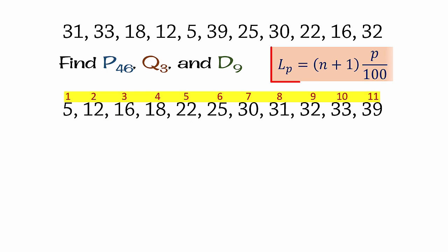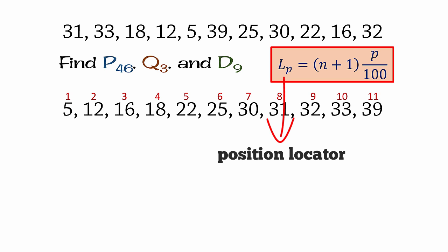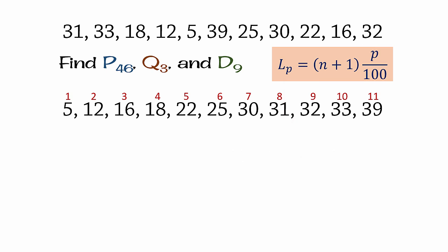We will be using this locator formula, where LP is the position locator of the Pth percentile, and N is the number of observations, which is 11 in this example.